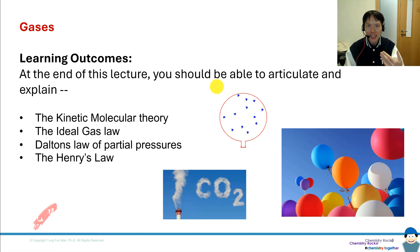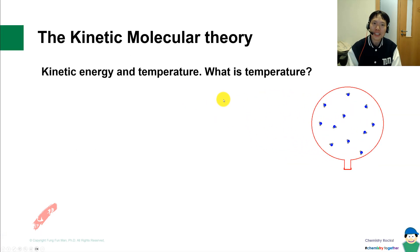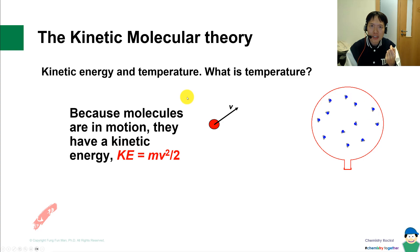First of all, the kinetic molecular theory. Let's understand the relationship between kinetic energy and temperature. Temperature is a commodity that humans coined, and we measure it by different scales: degrees Celsius, Fahrenheit, Kelvin. But what is it really? It is a measurement of the amount of kinetic energy.